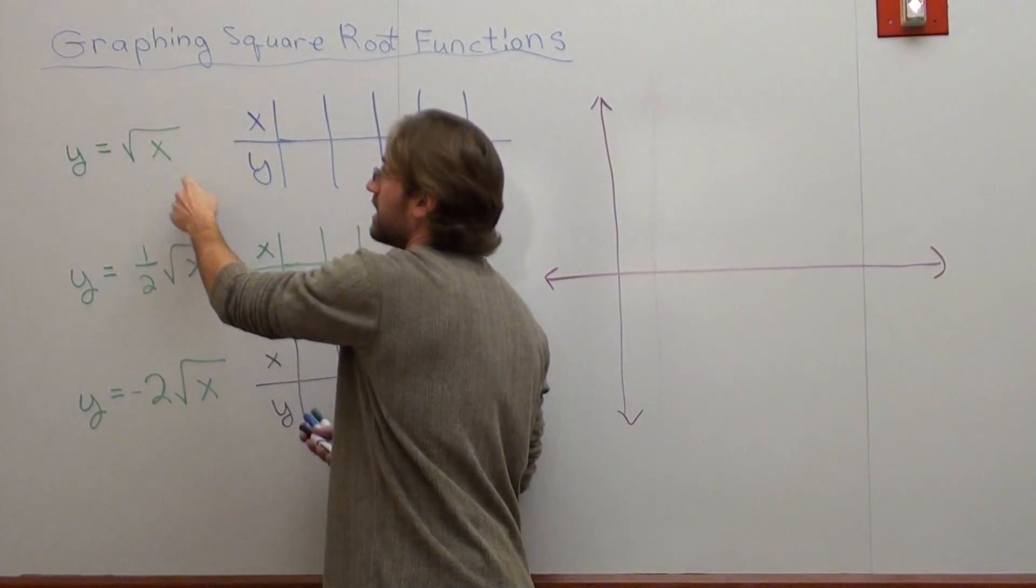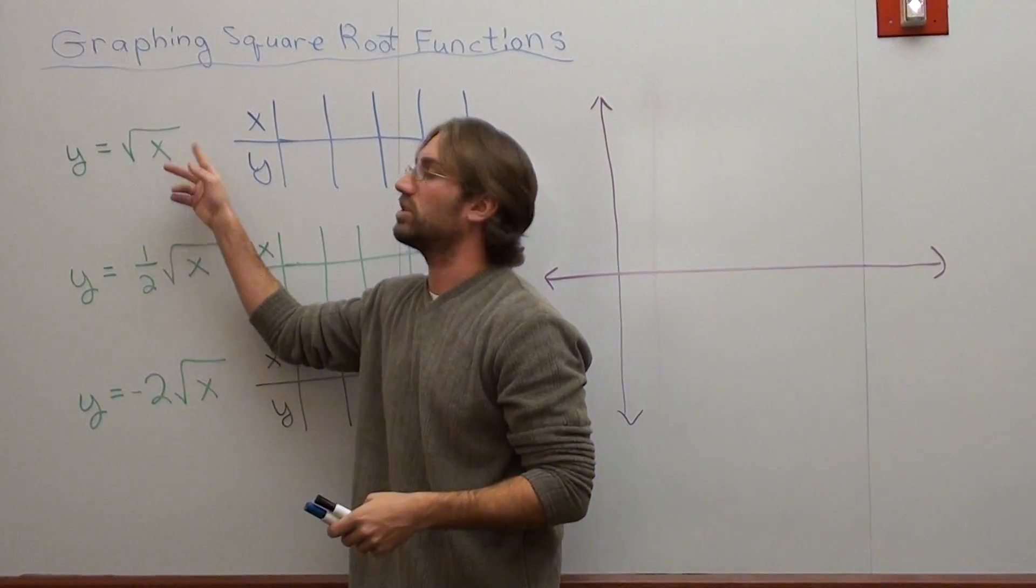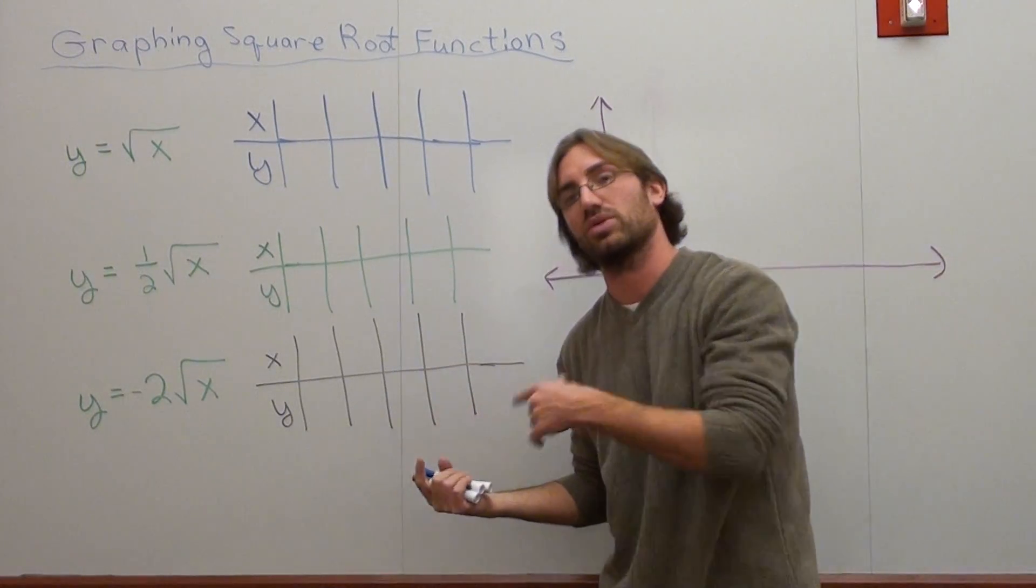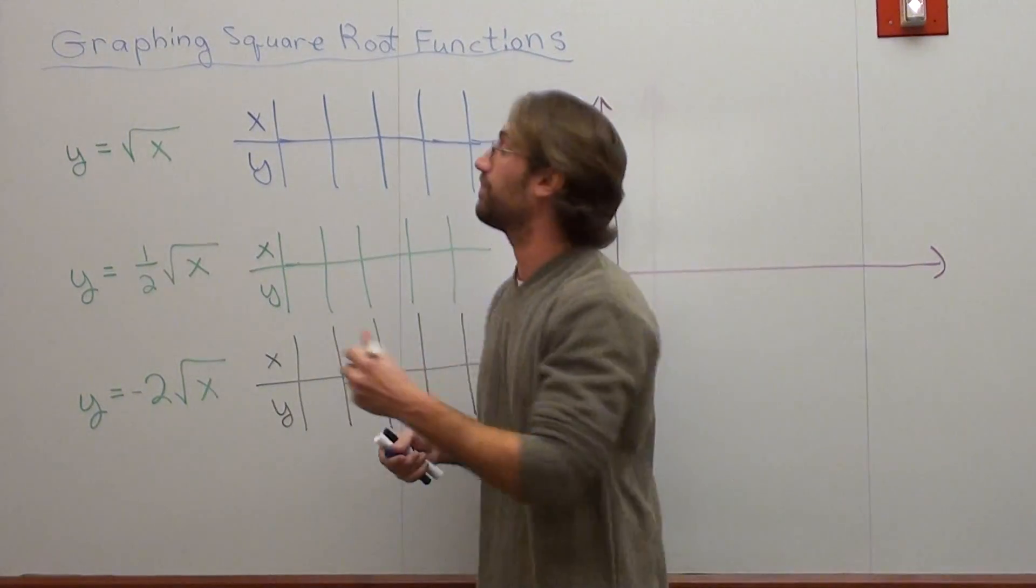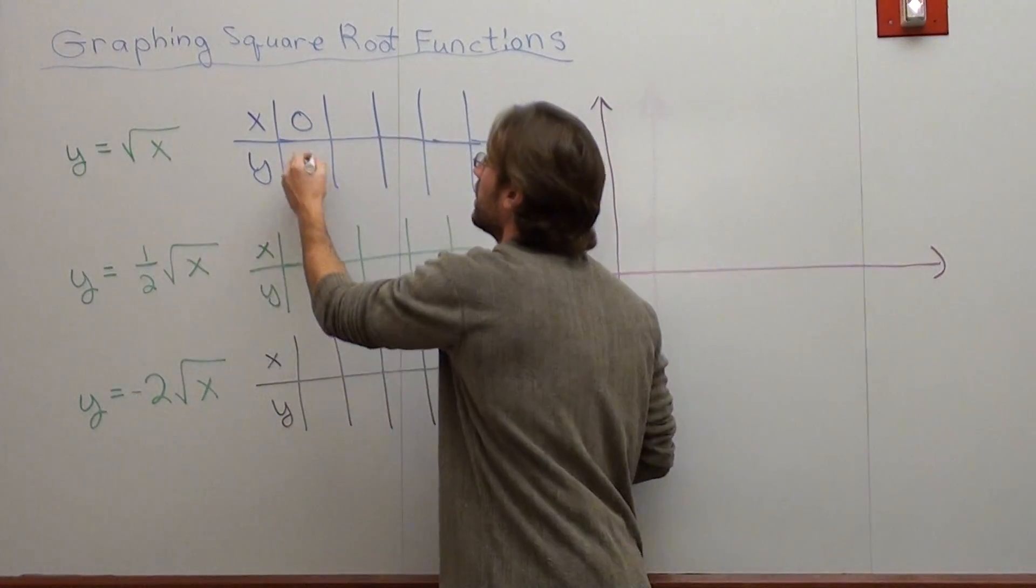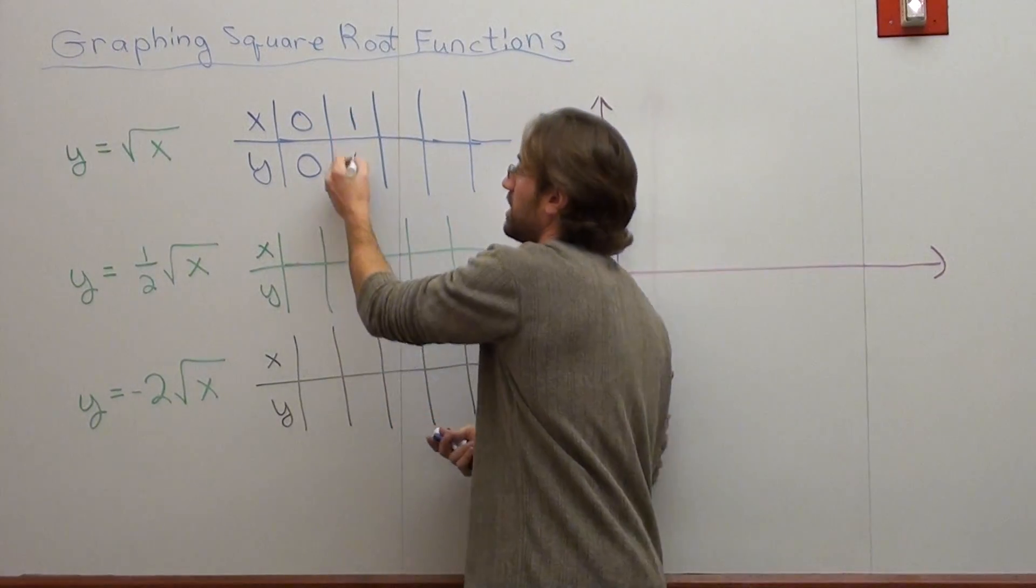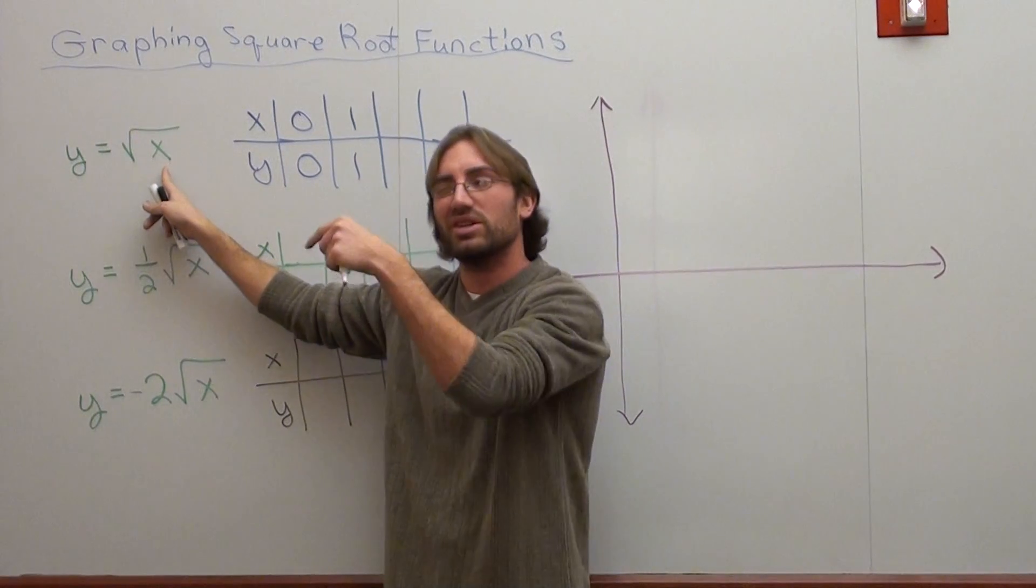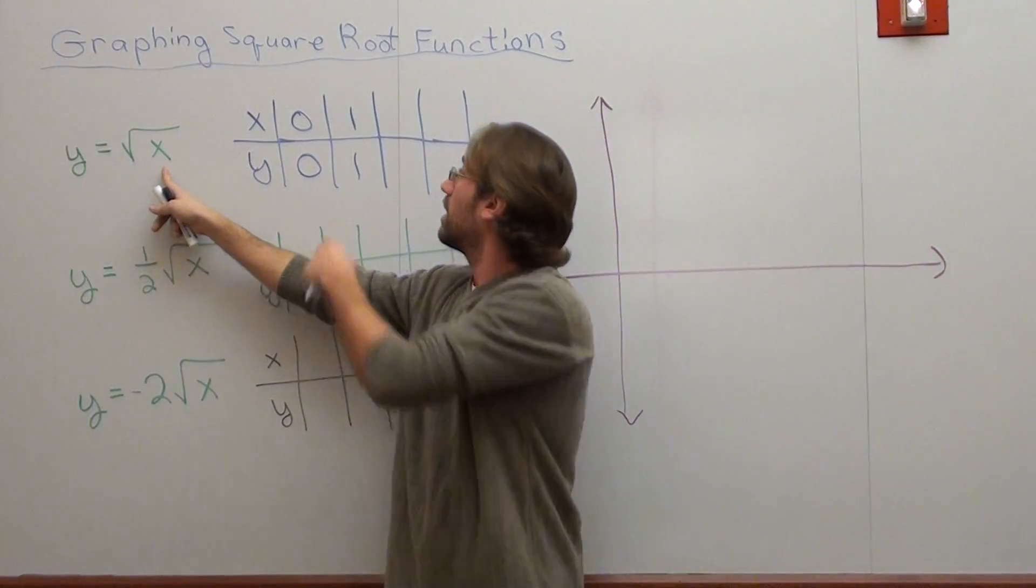So I can't put negative 1 in for this one or this one or this one. I can't put in any negative number actually because it'll be an imaginary number. So what I'm going to start with is the smallest possible value that I can in order to satisfy the condition. The first value that I want to use for this one is zero. And you can take the square root of zero. The square root of zero is zero.